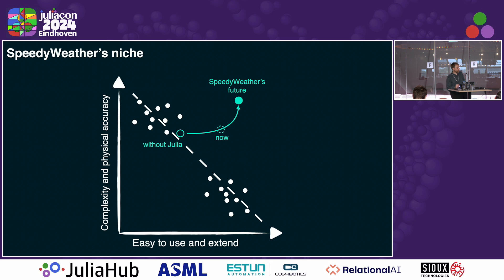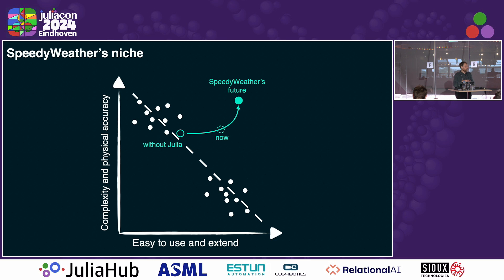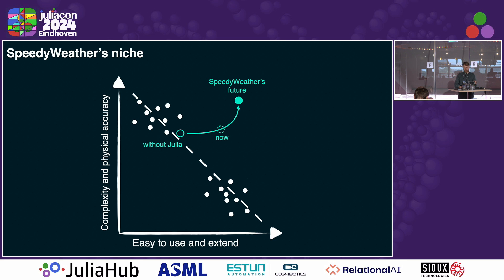SpeedyWeather's niche is this: if you think about atmospheric models — and I think the same holds for ocean models — there's a trade-off between models that are really complex and physically accurate, and those that are really easily usable. There's a gap in between, where you have models developed to be super accurate running in big weather forecasting centers, and then a lot of toy models. SpeedyWeather falls into this gap. By using Julia and the concepts I'll present, I've pushed it much more toward the usable and extendable end, and my master plan is that once it becomes a platform people can use easily, its physical accuracy will just shoot up and reach a completely new area on that graph.